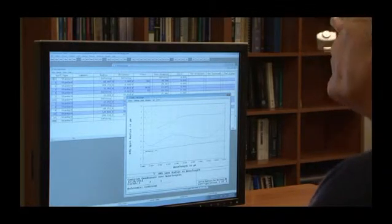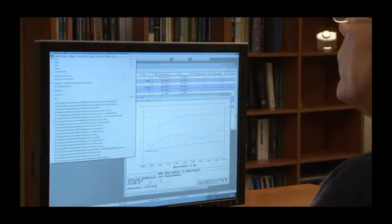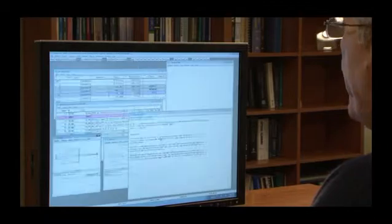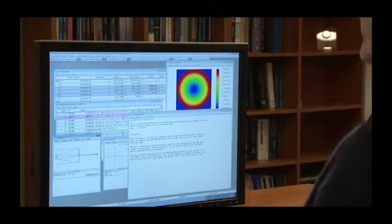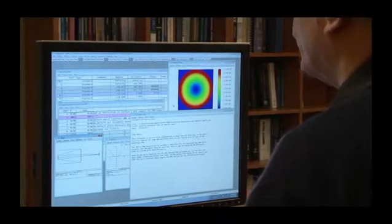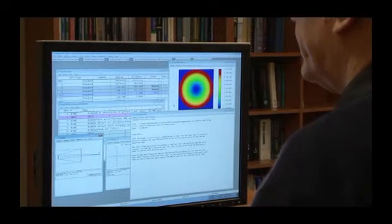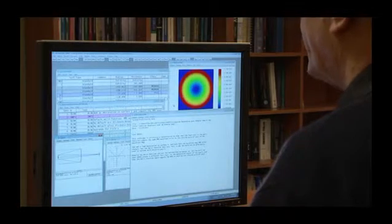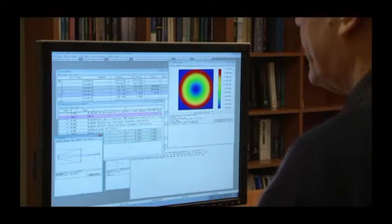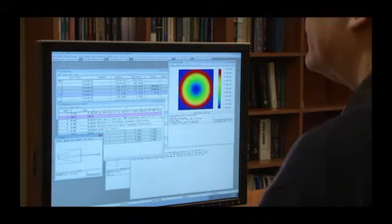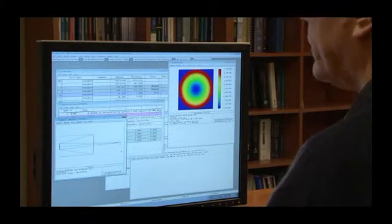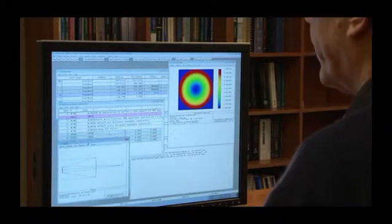Moving on from that example, let's have a look at the annular pupil case. Both of these sample files that I'm using are actually provided in the ZMAX 12 distribution, so you can look at these in your own time as well. And again, I have a very simple system here. I just have a standard Cassegrain type telescope. No real surprises. It's got a corrector lens, but no real surprises on it.